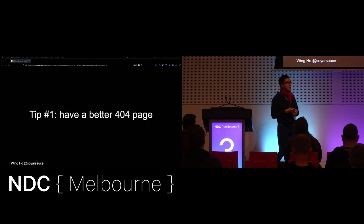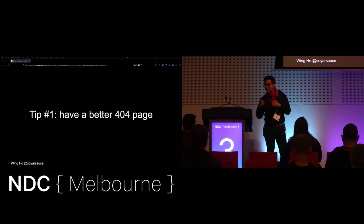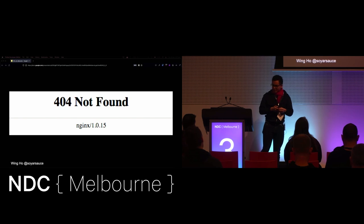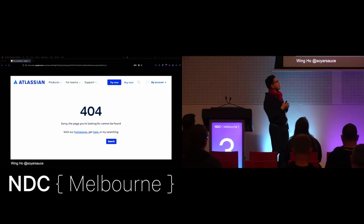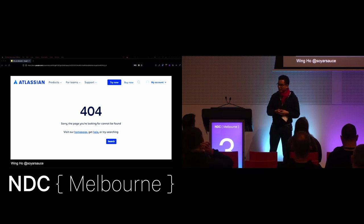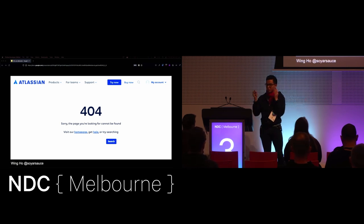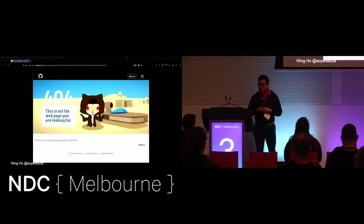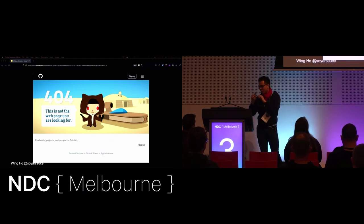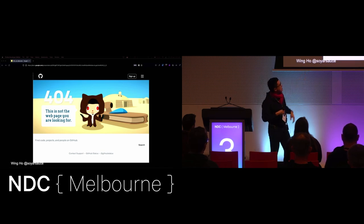That leads into the first tip, which is to have a better 404 page. So instead of giving your users something plain and ugly, you might want to do something with your design language coming through, using your design system, and maybe a search box to help your users find what they were looking for. This is another example you might be familiar with — the one from GitHub, where they have a cute logo and a search bar on the page.